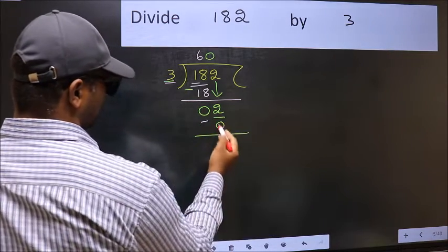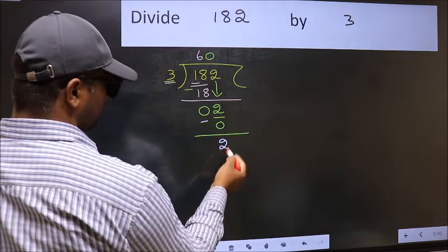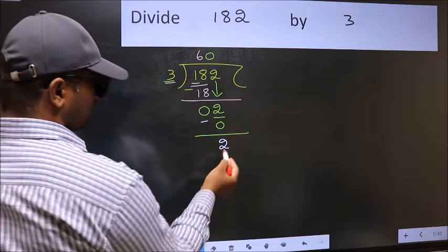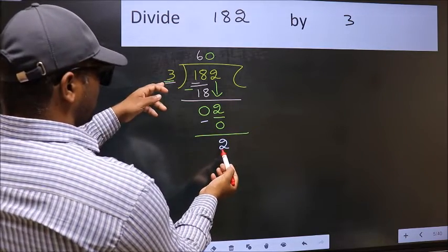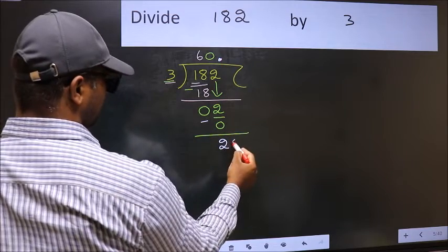Now, you subtract. 2 minus 0, 2. Over here, we did not bring any number down. And 2 is smaller than 3. So, now you can put a dot and take 0.